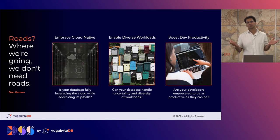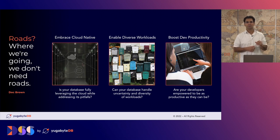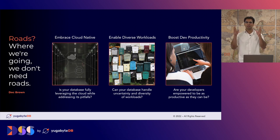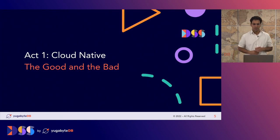Marty asks Doc what's going on. Doc says there are three things to keep at the top of your head. First, embrace cloud native — make sure your architecture, applications, and database truly leverage the strengths of the cloud while mitigating its weaknesses. Second, be prepared to enable diverse workloads, because workloads are going to be diverse. Third, make sure developer productivity is really boosted so you can build and ship features really quickly.